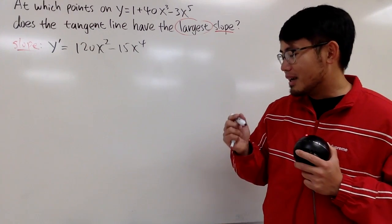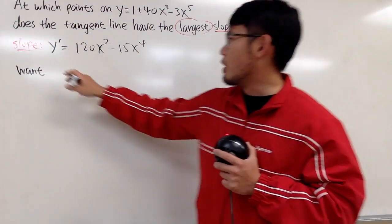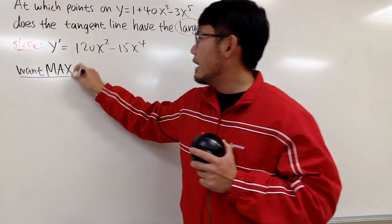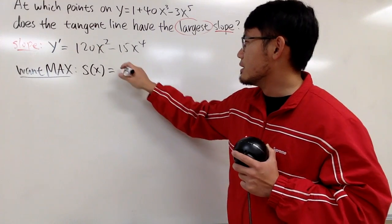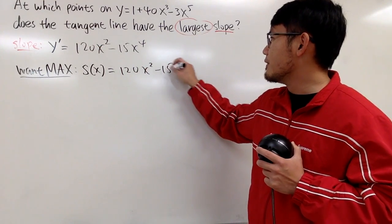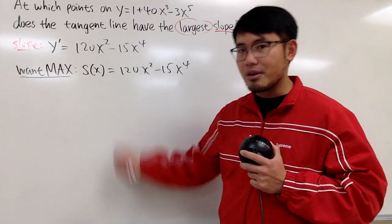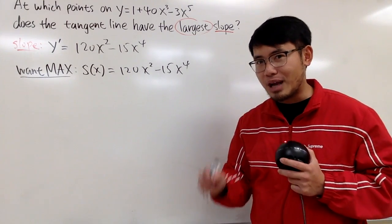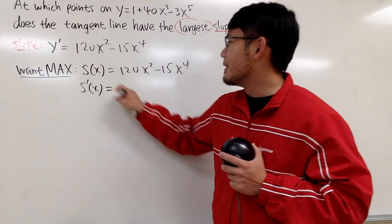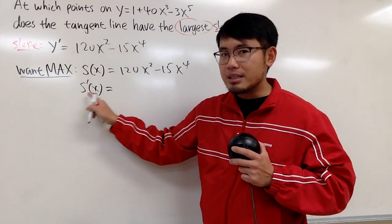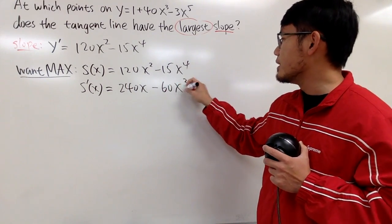To keep our sanity, let's define this to be the slope function S(x) = 120x² - 15x⁴. I will differentiate this again because I'm finding the maximum of S(x) — the maximum slope. So S'(x), which is the same as the second derivative of the original, equals 240x - 60x³.